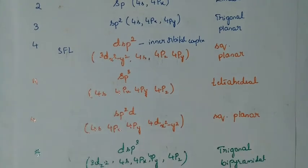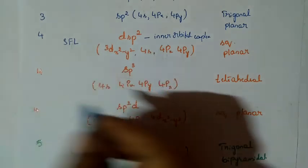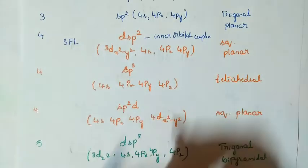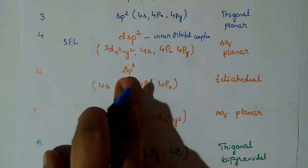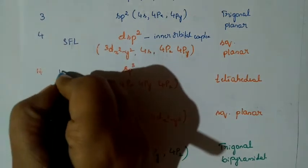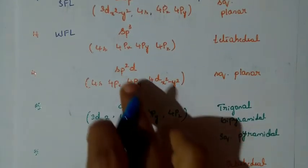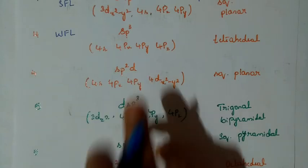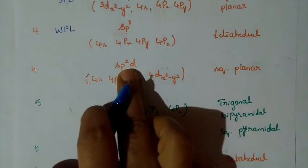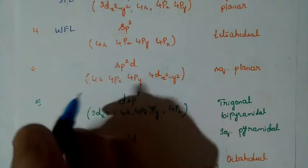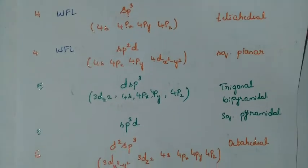If SP3 is concerned, there is no D orbital, making it an outer orbital complex. Since pairing doesn't take place, we can say it is a weak field ligand. Similarly, for SP2D, the D is present as 4D, which also corresponds to a weak field ligand with no pairing.